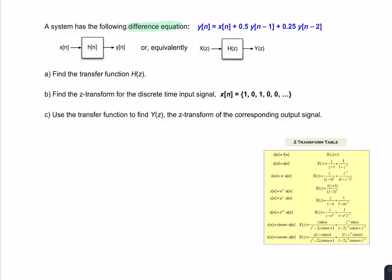Here we're given a difference equation, and we're asked for the transfer function — the relationship between Y(z) and X(z). The transfer function is simply Y(z) divided by X(z), and what we're given is the relationship between y(n) and x(n). By taking the Z-transform of each term in this difference equation, we should be able to rearrange and find the transfer function.